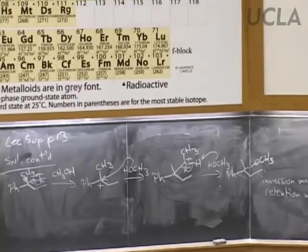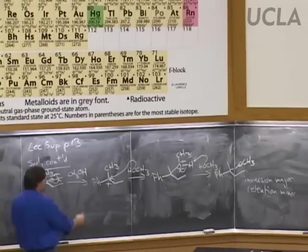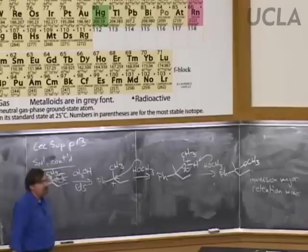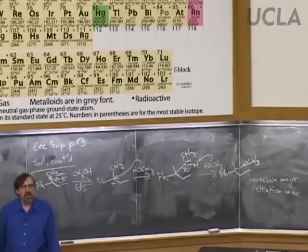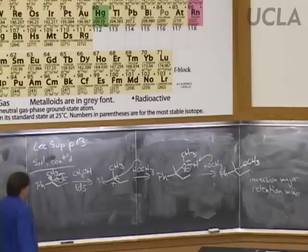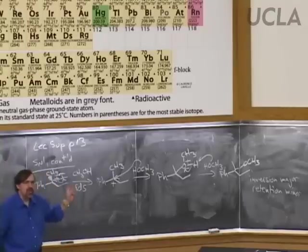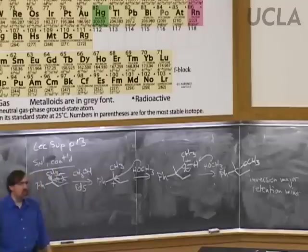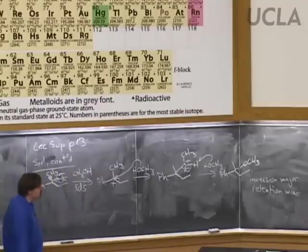The ionization step is the rate-determining step — the energetically most expensive process, the one with the highest energy of activation. This is the step that influences the rate. The other two steps are much faster than this ionization step. So when we talk about the rate, this is the step we're going to focus on.